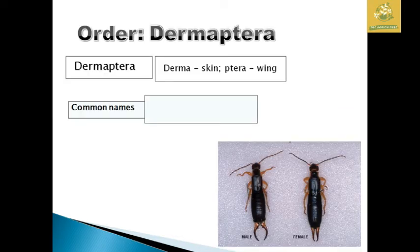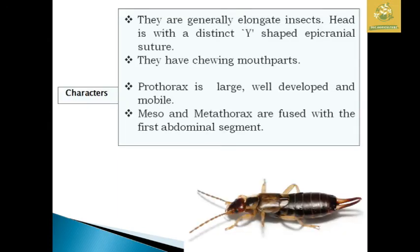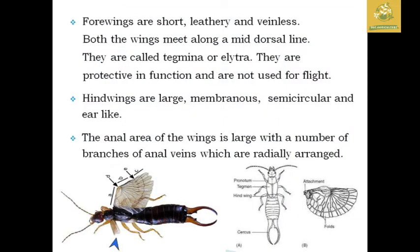The next order is Dermaptera. 'Derma' means skin and 'ptera' means wings, so these insects have skin-like wings. The common example is earwigs. They are generally elongate insects with a Y-shaped epicranial suture on the head, chewing mouthparts, and a large, well-developed, mobile prothorax. The meso- and metathorax are fused with the first abdominal segment. The forewings are short, leathery, and veinless, meeting along the mid-dorsal line, called tegmina or elytra. They are protective in function and not used for flight.